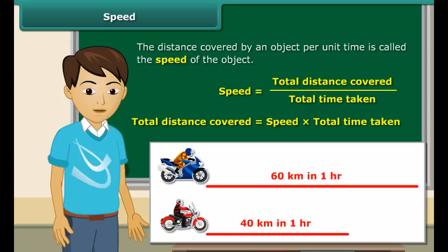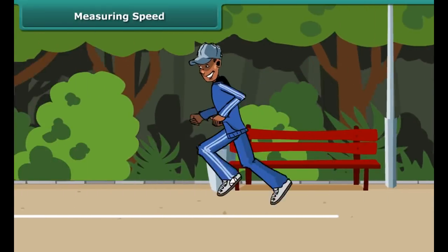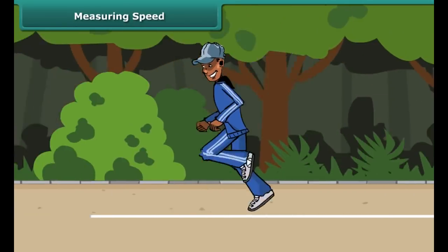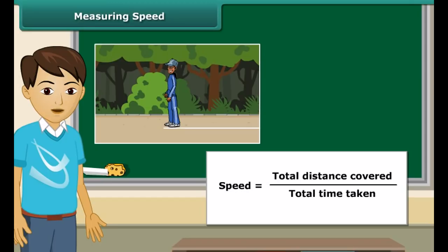The most convenient way of finding which object moves faster is to calculate and compare the distances covered per unit time. The object that covers a greater distance per unit time is faster. The distance covered by an object per unit time is called the speed of the object. For example, your brother's motorbike covers 60 km in an hour, whereas his friend's bike covers 40 km in one hour. Your brother's bike is faster because its speed of 60 km per hour is greater than 40 km per hour.